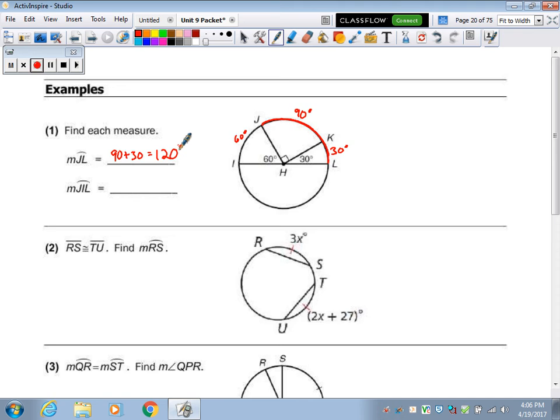What about J, I, L? So that's J, I, and then that half of the circle. This whole half of the circle is 180, plus this extra 60. 240.